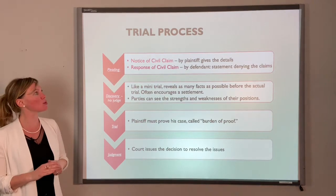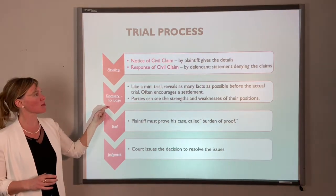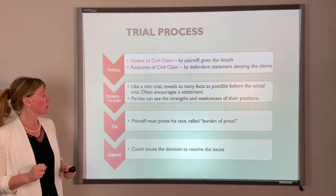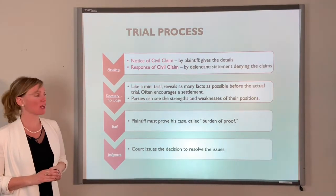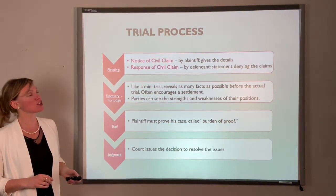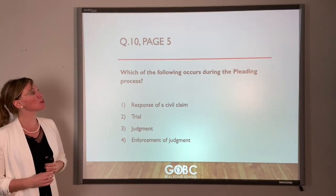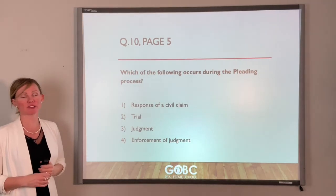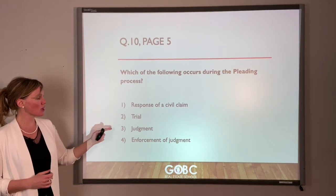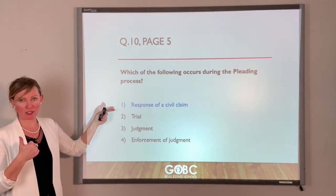Notice of civil claim comes first, done by the plaintiff. Response of civil claim comes second, done by the defendant. After pleading comes discovery - a kind of mediation with no judge - where they try to settle the case. Then it goes to trial, where the judge looks at both sides. Whoever loses becomes the judgment debtor. Question ten: which occurs during pleading? It's the response of civil claim, done by the defendant.